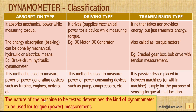From this description we can identify that the nature of the machine to be tested determines the kind of dynamometer to be used. If it is a power-generating device we use an absorption type dynamometer; if it is a power-consuming device then we use a driving type dynamometer.